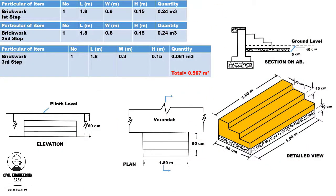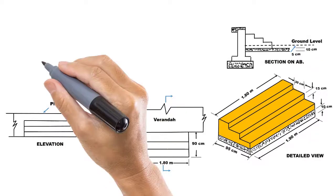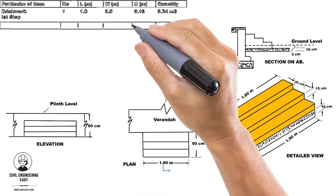For the brickwork in the first step: the length of brickwork is 1.8 meter, width is 0.9 meter, and thickness is 0.15 meter. The total brickwork in the first step will be equal to 0.24 cubic meter. For the brickwork in the second step, the length of the brickwork is...